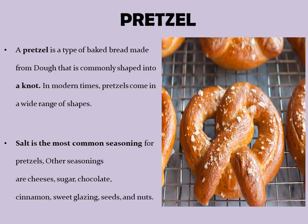Then we have the next variety of bread: pretzel. A pretzel is a type of baked bread made from dough that is commonly shaped into a knot. In modern times, pretzels come in a wide range of shapes. Salt is the most common seasoning for pretzels. Other seasonings include cheeses, sugar, chocolate, cinnamon, sweet glazing, seeds, and nuts.